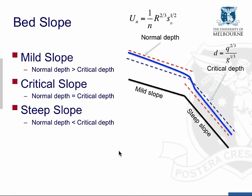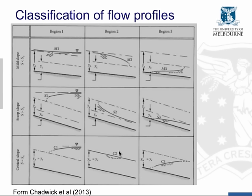We can actually calculate the normal depth and the critical depth using the equations covered earlier. There's a classification of flow profiles available in a number of textbooks. These profiles are classified based on whether the slope is mild, steep, or critical, and then based on whether the water surface profile lies above both the normal depth and critical depth (region one), between the critical depth and the normal depth (region two), or below both the critical depth and the normal depth (region three).